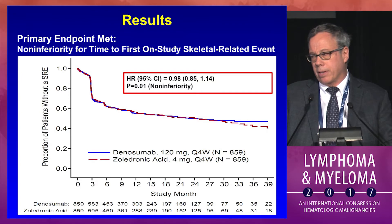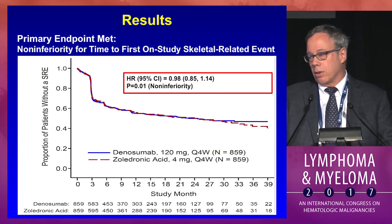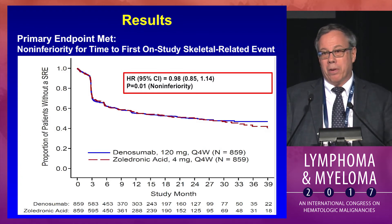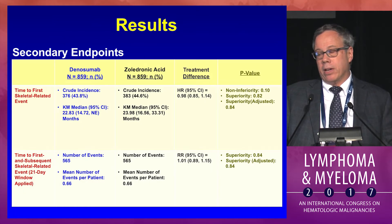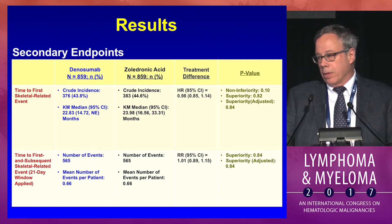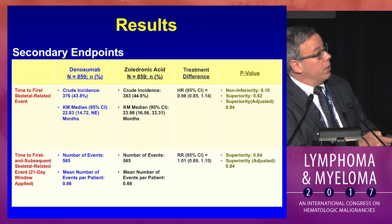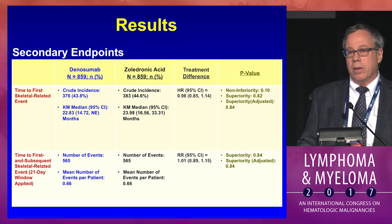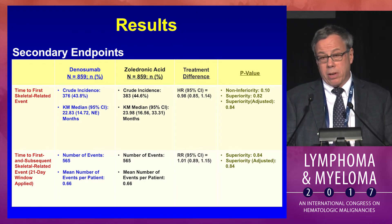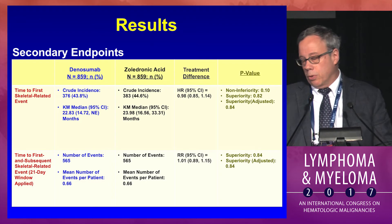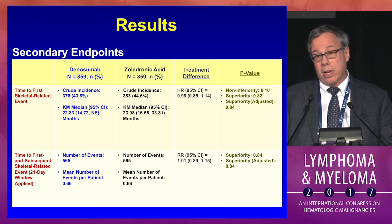The data show absolutely no difference in the primary endpoint — time to first skeletal related event — which is the same endpoint we used in our first pamidronate versus placebo trial begun 28 years ago. Secondary endpoints including time to first skeletal event cumulatively and time to first and subsequent skeletal events are also remarkably similar — the numbers are essentially identical, with p-values showing no statistical difference. There was mention of a 40-event difference between arms, but that could simply be statistical noise since it's not statistically significant.